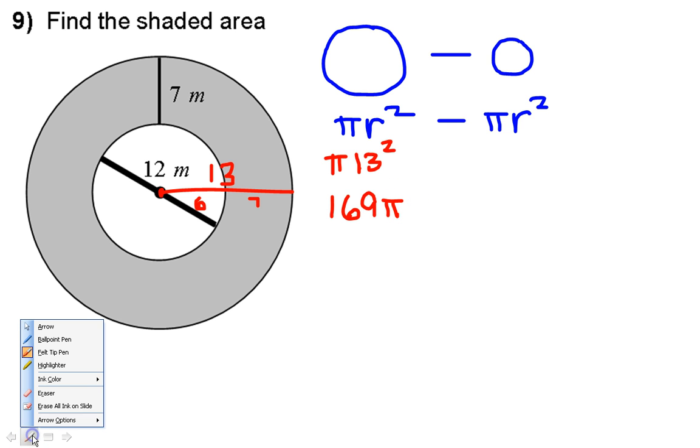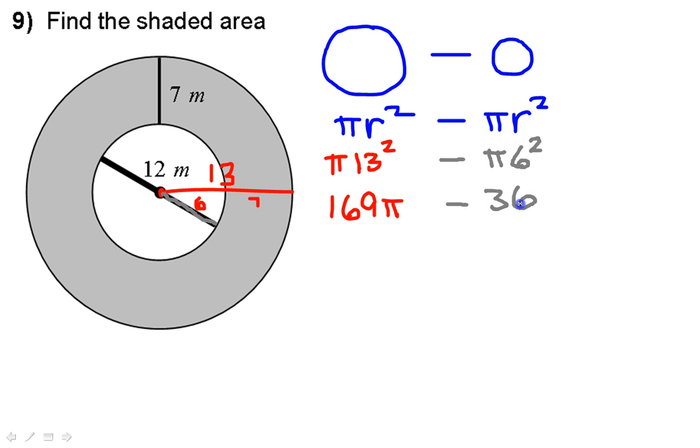When I do the smaller circle, the radius is 6, as we discussed a moment ago. So I'm just going to do minus pi times 6 squared, which is minus 36 pi.